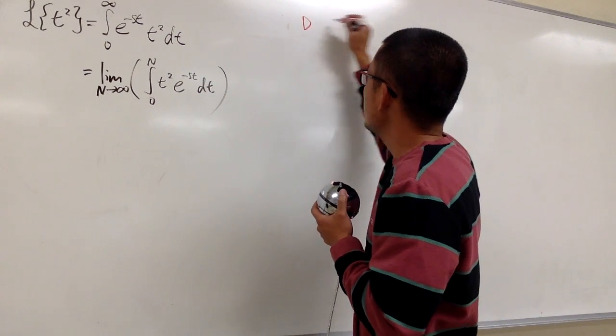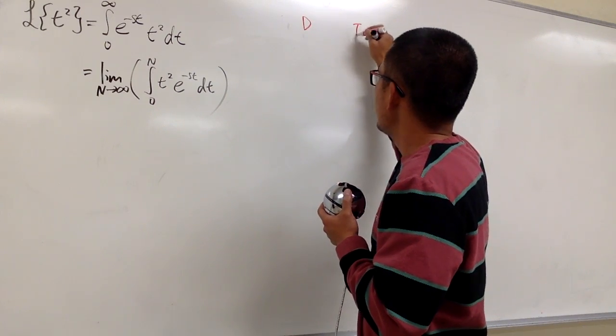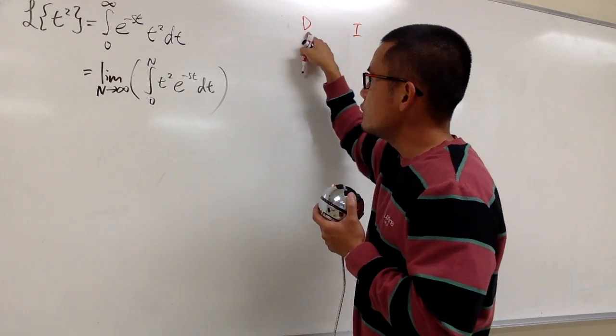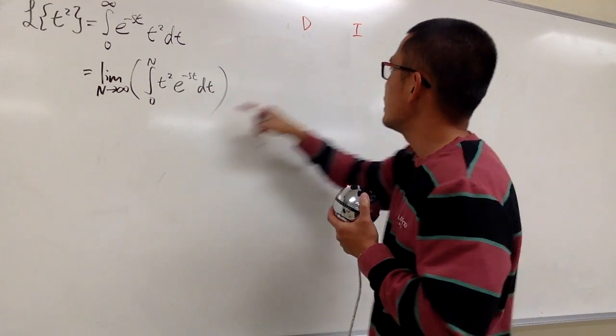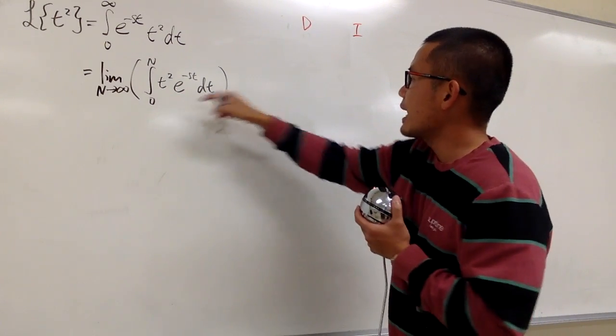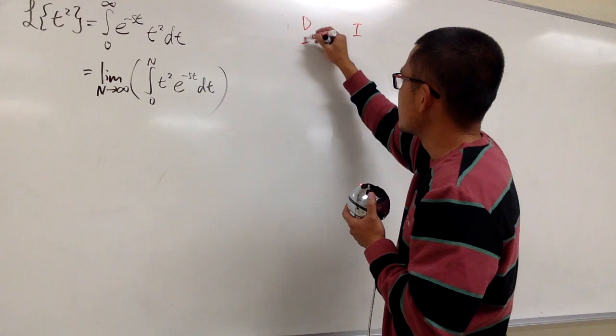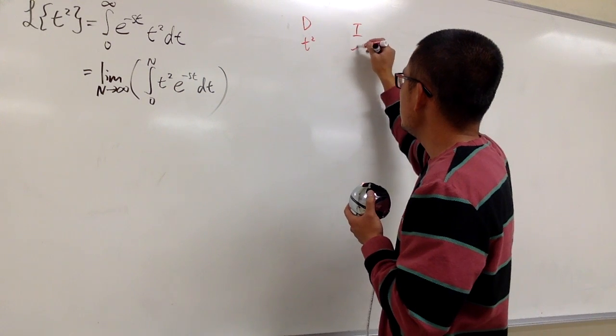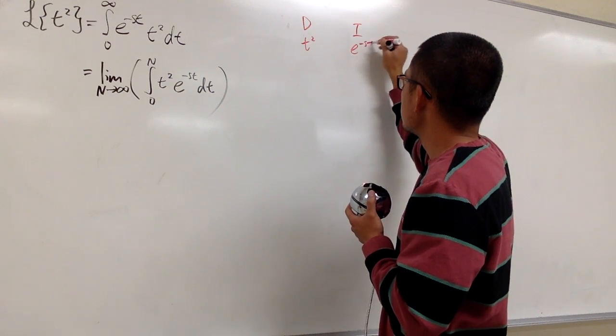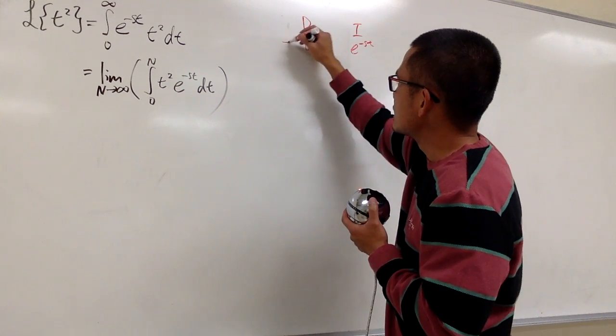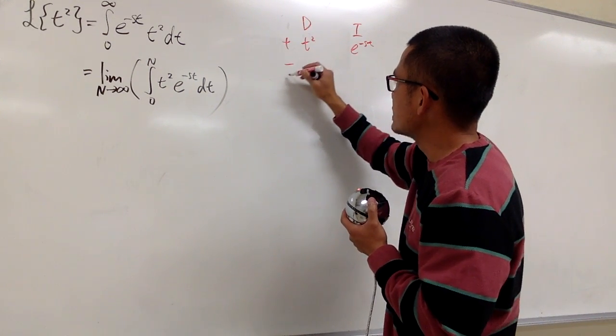Let me set up the D and I columns. I will be differentiating t squared and integrating e to the negative st. So let's put down t squared in the D column and e to the negative st in the I column, with plus, minus, plus, minus signs.